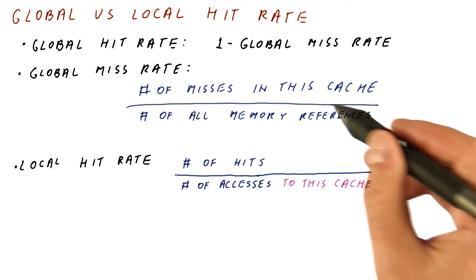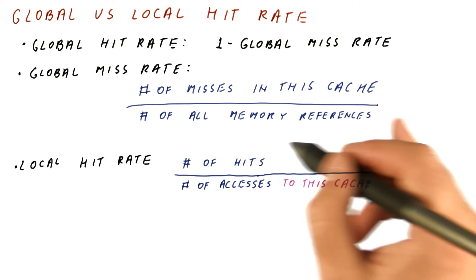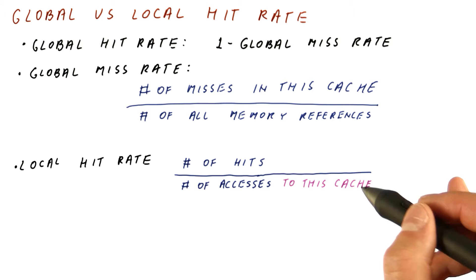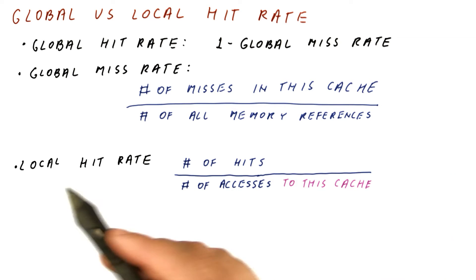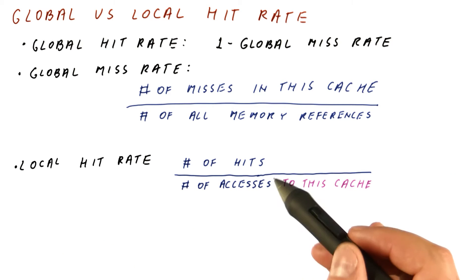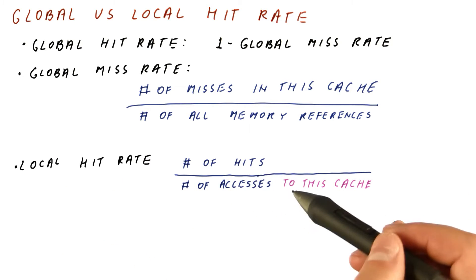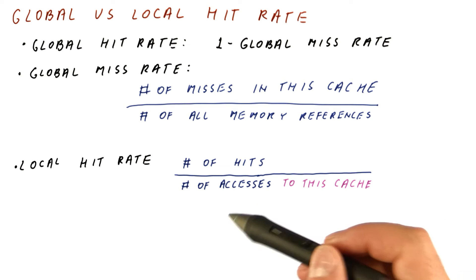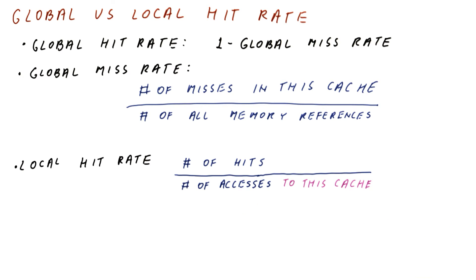Remember that not all of the memory references the processor makes actually reach this cache. The local miss rate simply can be the number of misses divided by the number of accesses, and they, of course, still add up to 1.